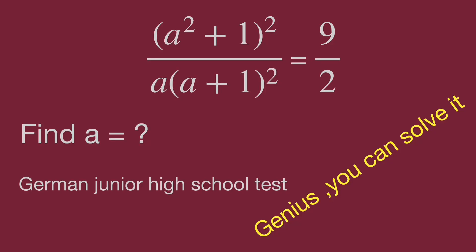Hello, you are watching Balahippo Math Genius Riddle. The question comes from a German junior high school test. We have (a² + 1)² over a multiplied by (a + 1)² equal to 9 over 2. Find the value of a.